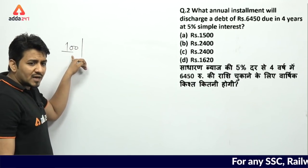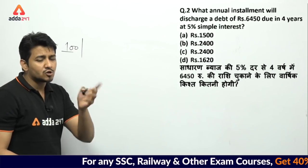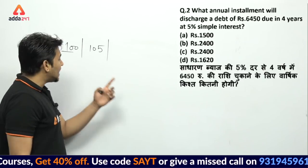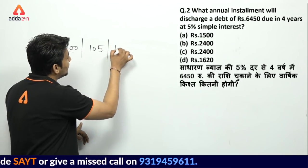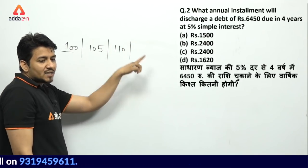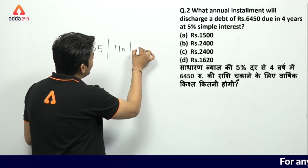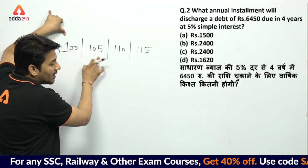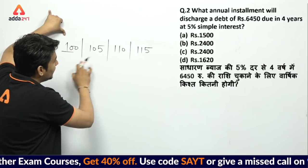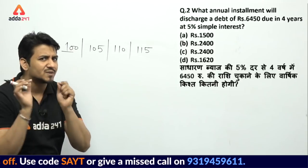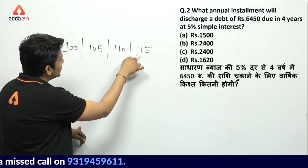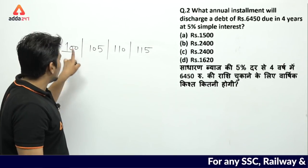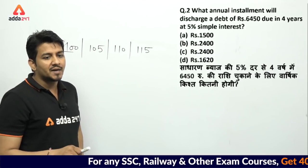Assume installment is 100 rupees. Rate is 5%, so add 5 each year: 100, then 105, then 110, then 115. Now add: 100 + 200 + 300 + 400 + 15 + 10 + 25 + 35 = 430 units. But the actual amount is 6450 rupees.